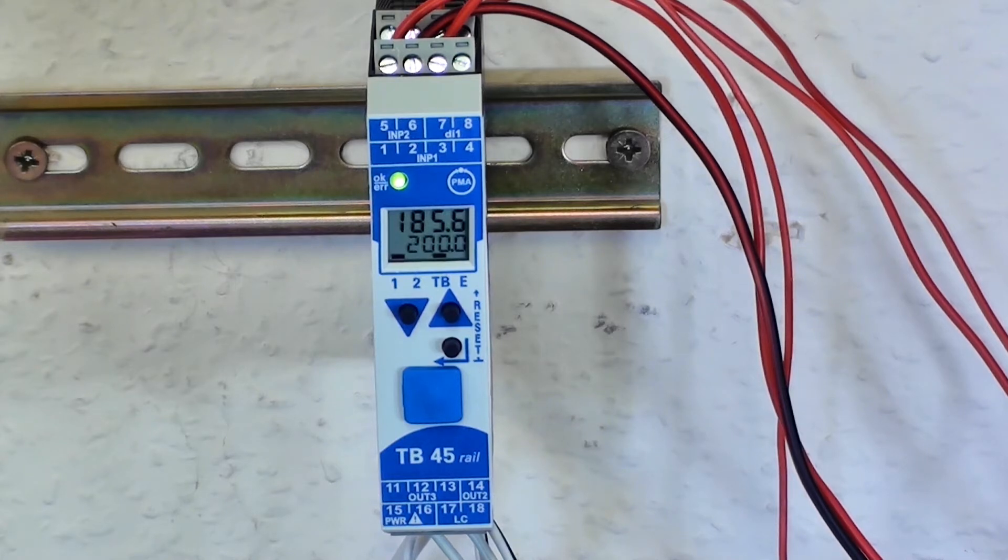TB45-2 is a temperature limiter. Temperature limiters use a latching output relay requiring a local or remote reset before operation is resumed.